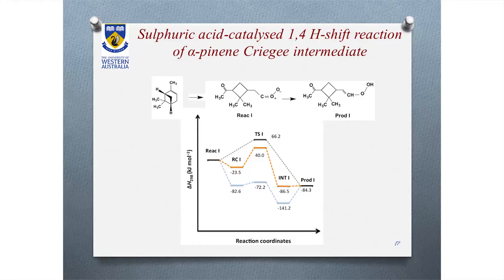Alpha-pinene is another common compound in the troposphere. We calculated the reaction mechanism for this component as well. Alpha-pinene has two rings, and through ozonolysis one ring is broken. The reaction profile for the 1,4-proton transfer shows that the catalyst reduces the barrier from 62 kJ/mol to less than 10 kJ/mol. This may be attributed to the fact that the reduced flexibility of this product leads to an earlier transition structure and less disorder.